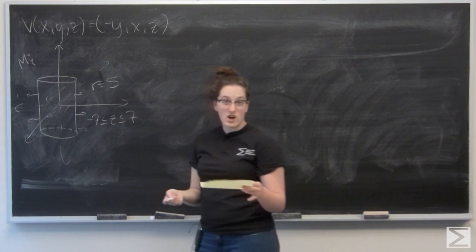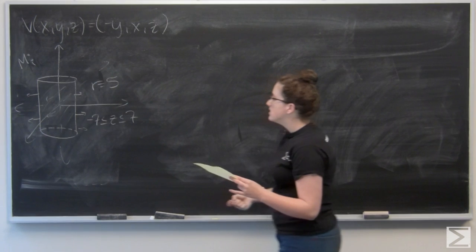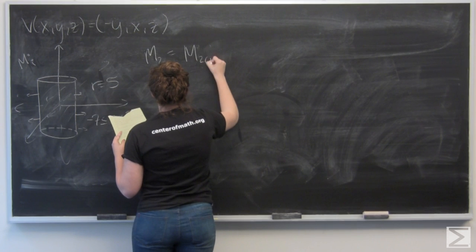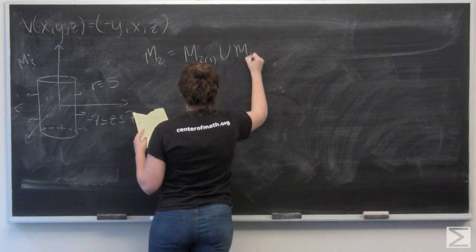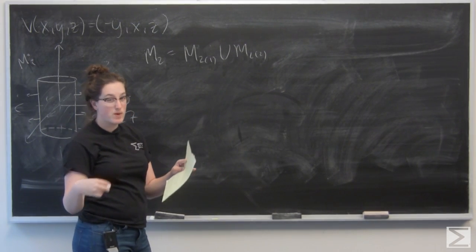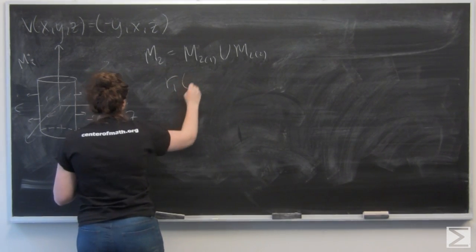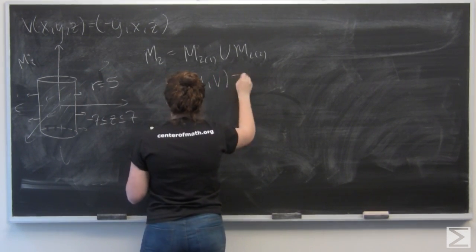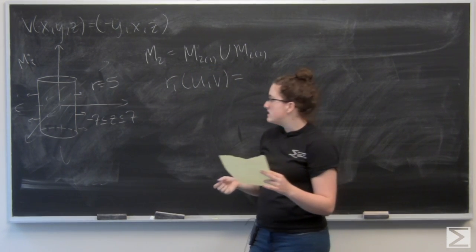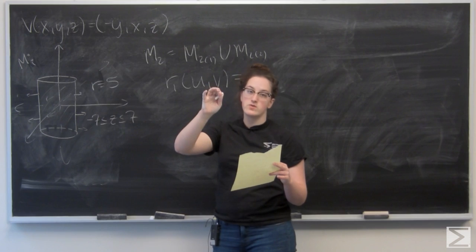So it would make sense to add a top and a bottom. I'm going to say that my closing surface M2 is the union of the top of the cylinder and the bottom of the cylinder. I need to parametrize those, so let's do the top first. I'm going to parametrize in terms of U and V, making a circle in the XY plane that sits at z equals 7, so the third component is just the constant 7.